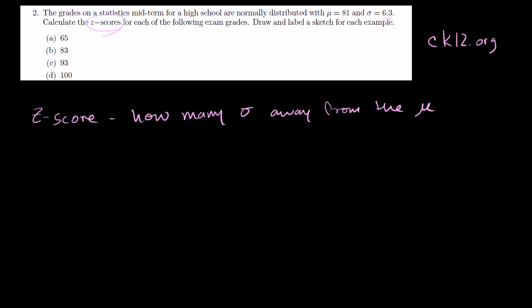So let me do part a. We have 65. First we can figure out how far 65 is from the mean. Let me just draw one chart here that we can use the entire time. If this is our distribution, we have a mean of 81. That's our mean. And then a standard deviation of 6.3. They're telling us that it's normally distributed. So that's as good of a bell curve as I'm capable of drawing. This is the mean right there at 81.